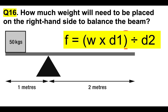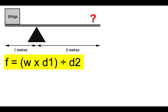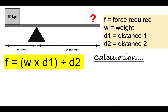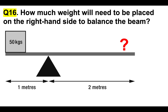The formula is: FORCE equals WEIGHT times DISTANCE 1 divided by DISTANCE 2. FORCE is the amount of weight we need to place on the right-hand side. In this case: FORCE = 50 kg × 1 m ÷ 2 m = 25 kilograms. So all we need to do is place 25 kilograms on the right-hand side. This formula is really useful for helping you pass your mechanical comprehension or aptitude test.